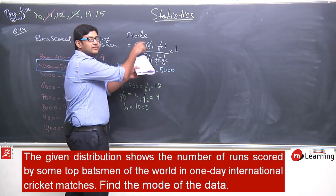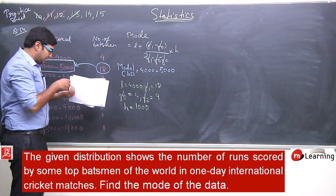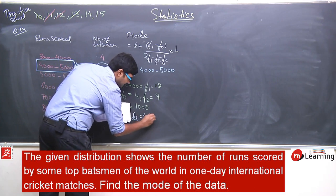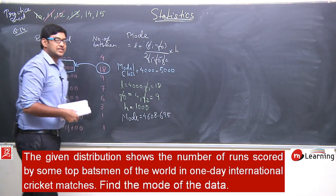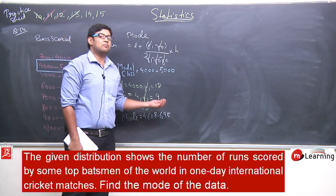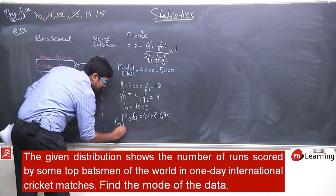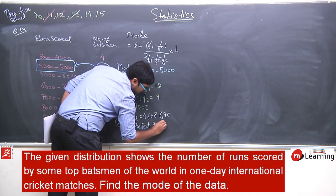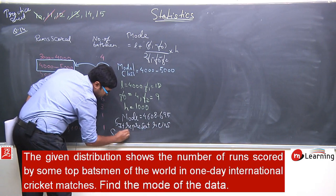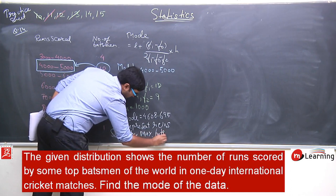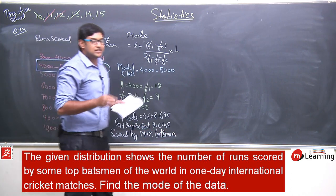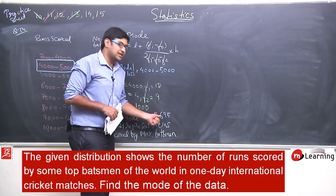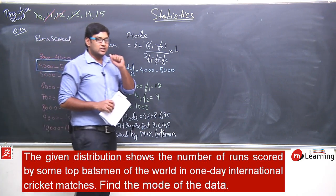Substituting these values in the formula, the mode of this data comes out to be 4608.695. This represents the runs scored by the maximum number of batsmen — it is the mode of this dataset.